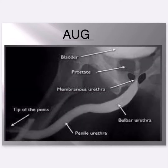AUG landmarks: bladder, prostate, membranous urethra, tip of the penis, bulbous urethra, and penile urethra.